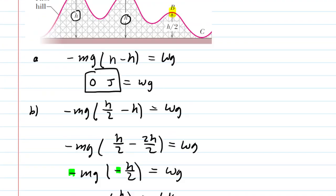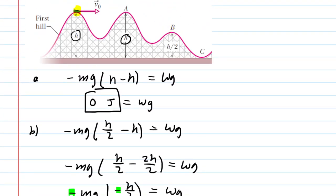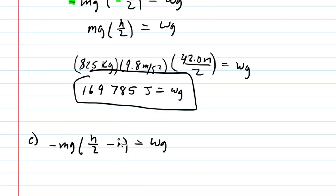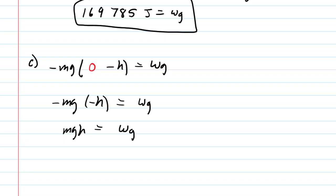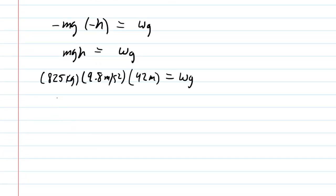In part C, we move the final height to ground level, where the height is zero. Using the same setup, in the parentheses we now have zero minus H, giving negative H. The two negatives cancel, leaving positive MG times H for the work done by gravity. Plugging in the known values, we get 339,570 joules. This is the correct answer to part C.